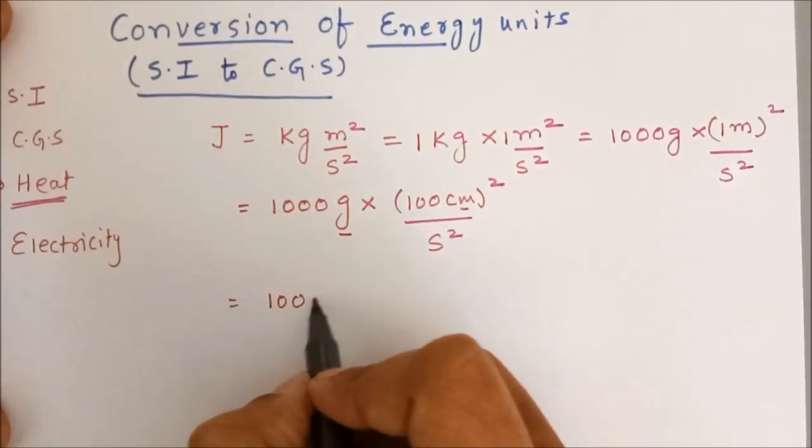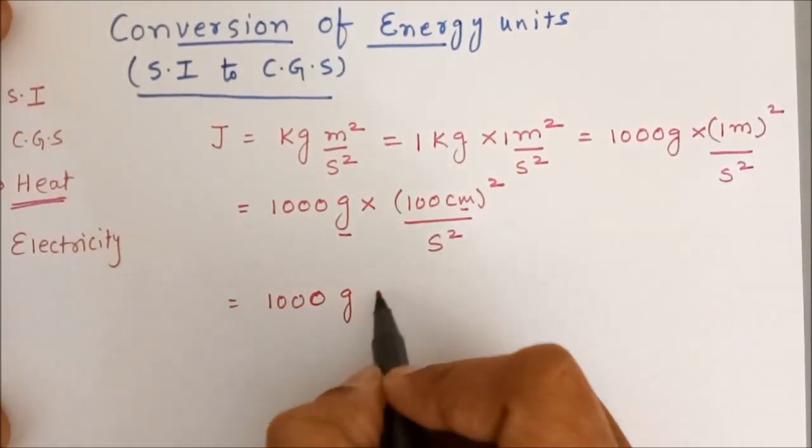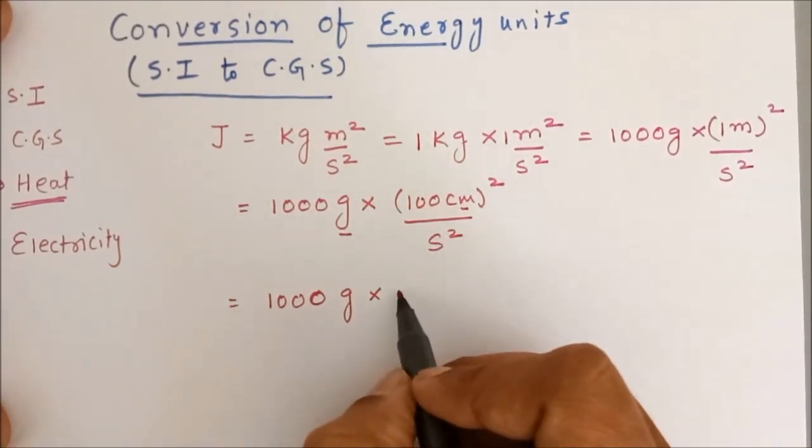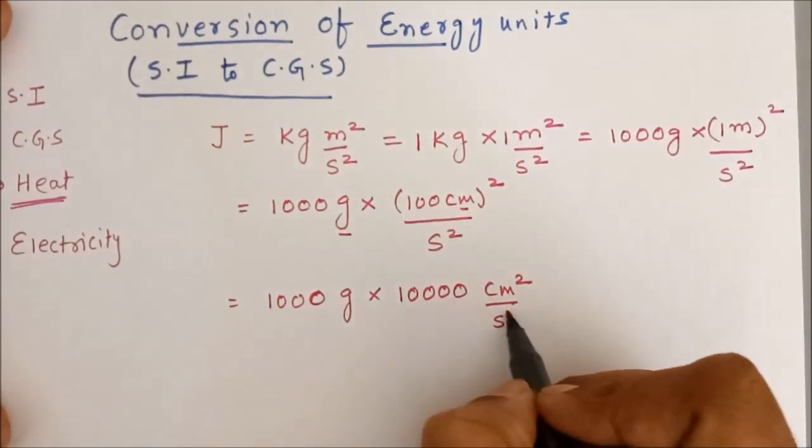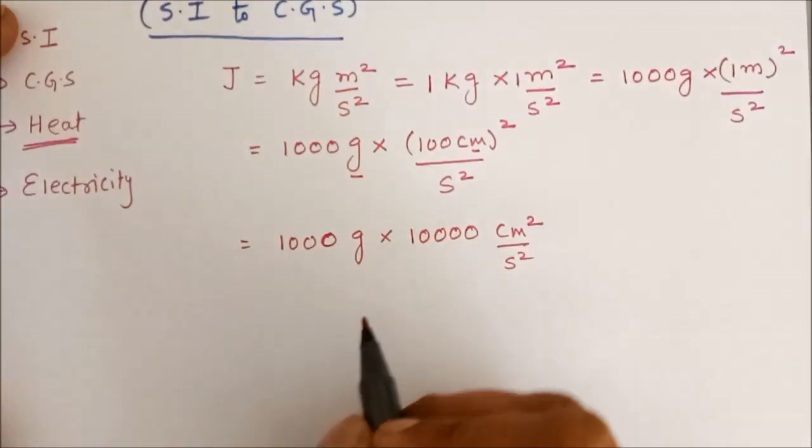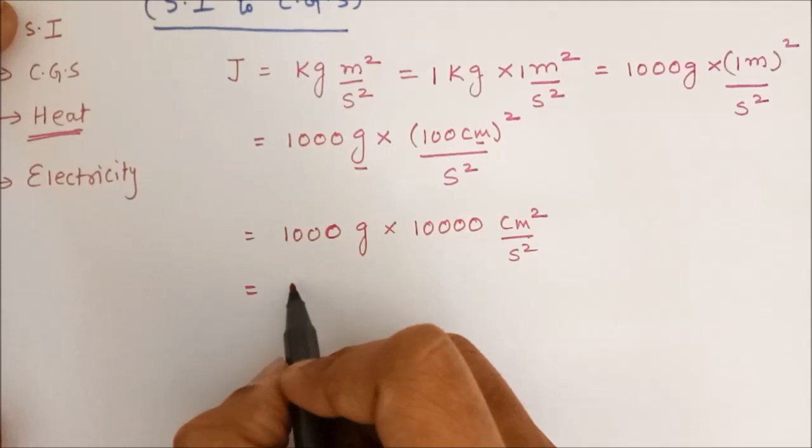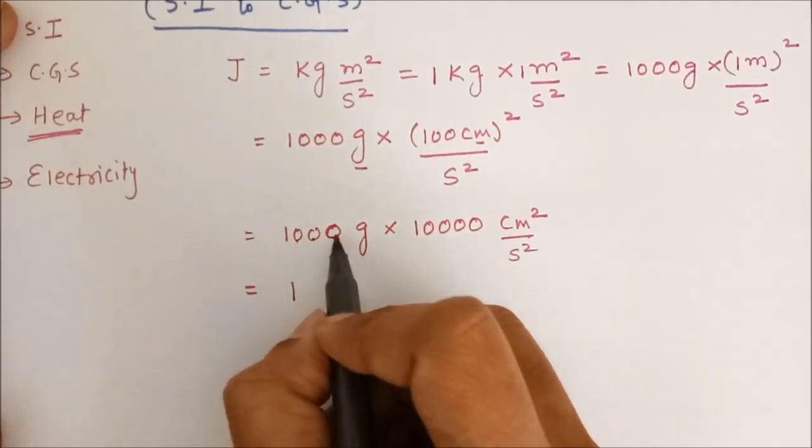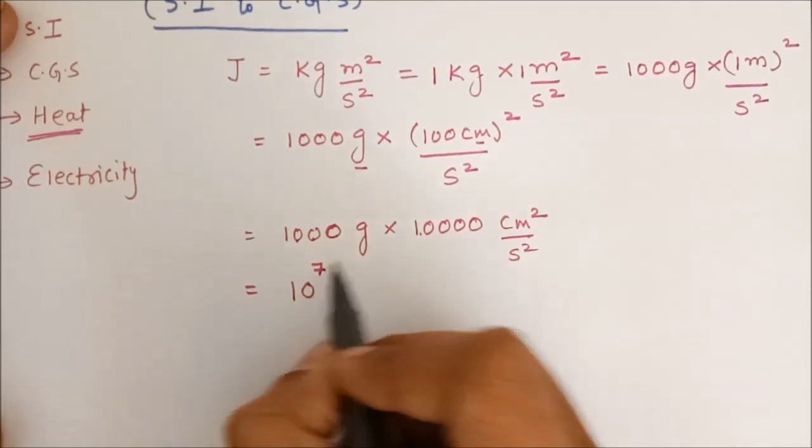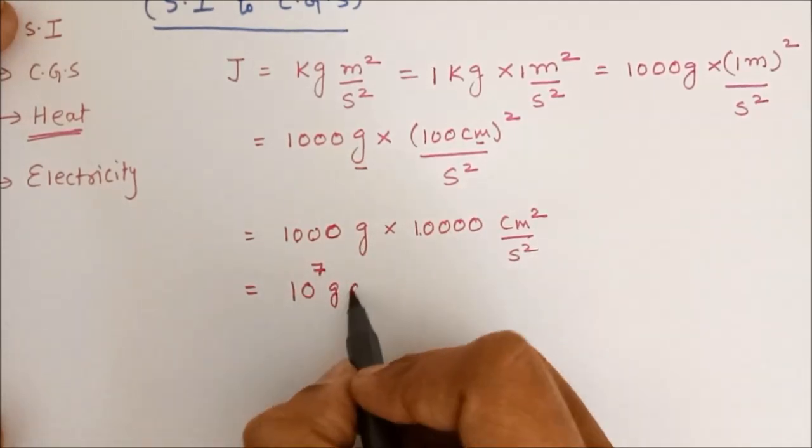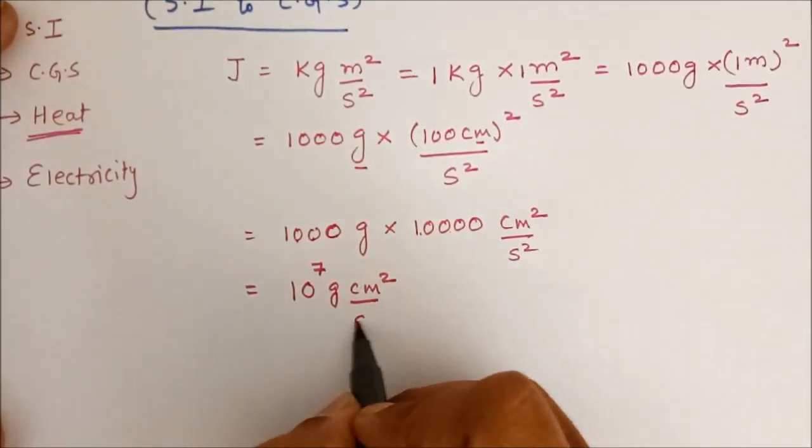So, this is 1000 gram into 100 square is 10,000 centimeter square upon second square. This is 10 raised to 7 gram centimeter square upon second square.